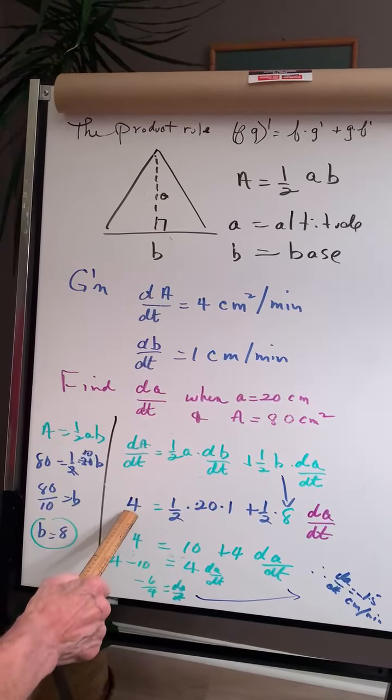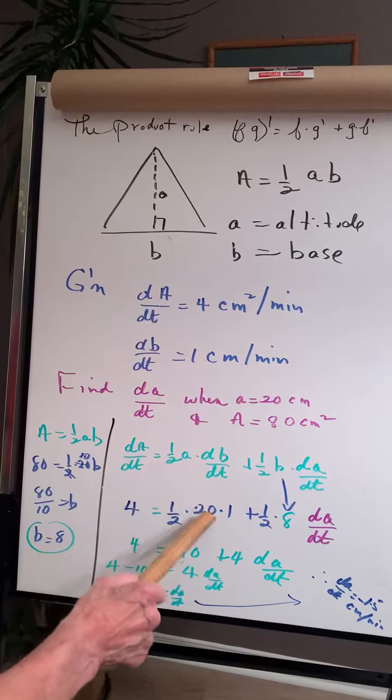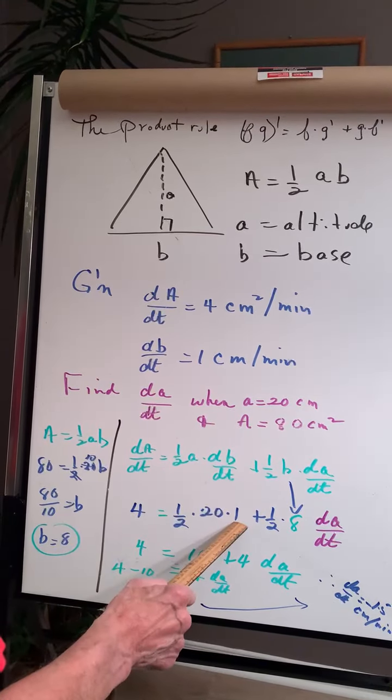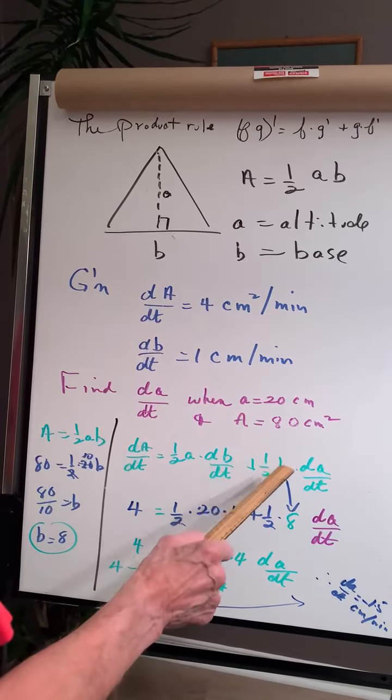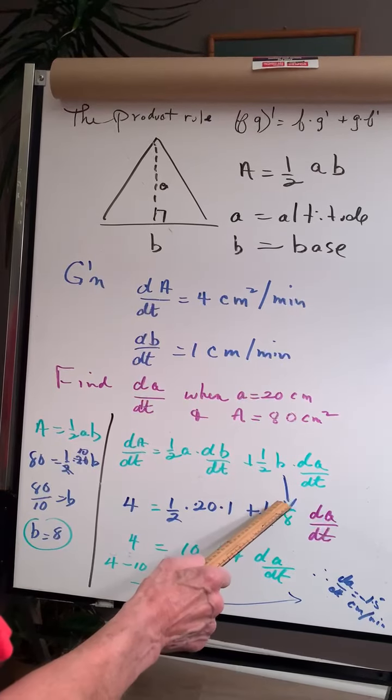We know the change in the area is 4 centimeters squared per minute, and we know we want a to be 20, and the change in the base is 1 centimeter per minute. We have one-half, but we haven't found the base yet.